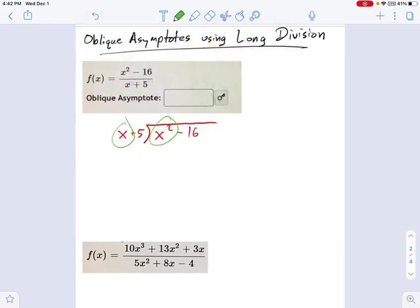x squared divided by x, what do we get from that? x squared divided by x is just x. And now, we're going to multiply x back down by x plus 5. And that gives us x squared plus 5x.